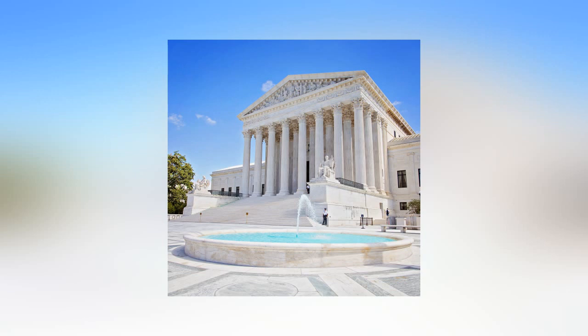The most relevant of these are found in subsection (d), which provides that a state may not remove a name on change of residence grounds unless the registrant either (a) confirms in writing that he or she has moved, or (b) fails to return a pre-addressed, postage prepaid return card containing statutorily prescribed content, and then fails to vote in any election during the period covering the next two general federal elections.